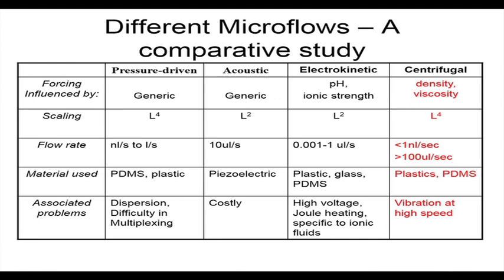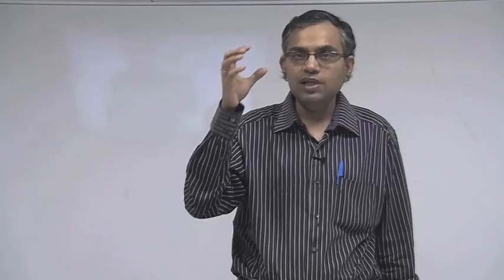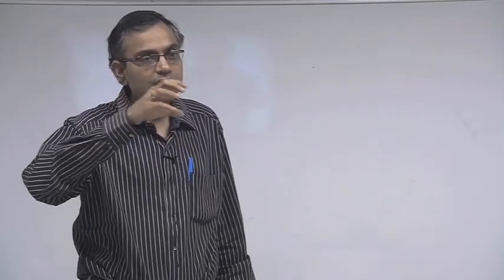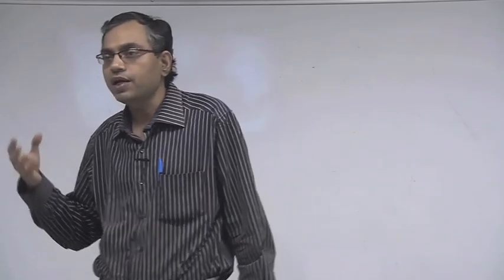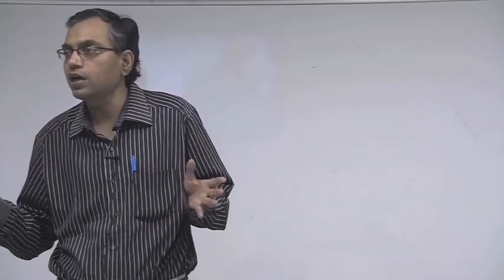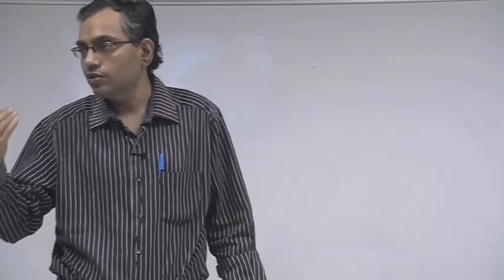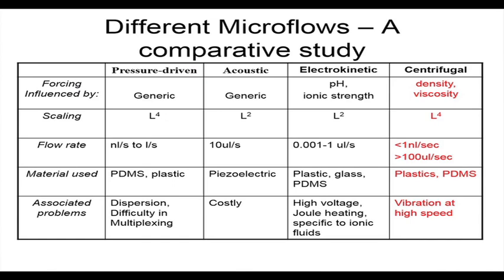Associated problems: pressure driven flow has dispersion — if you have a parabolic velocity profile, there is a big difference between center-line velocity and wall velocity. The fluid tends to carry the sample along the center line, and the wall may be deprived of the sample that should react with reactants present on the wall. Acoustic streaming is a somewhat expensive process. For electrokinetic flows, Joule heating is a very significant problem, as we will see later.